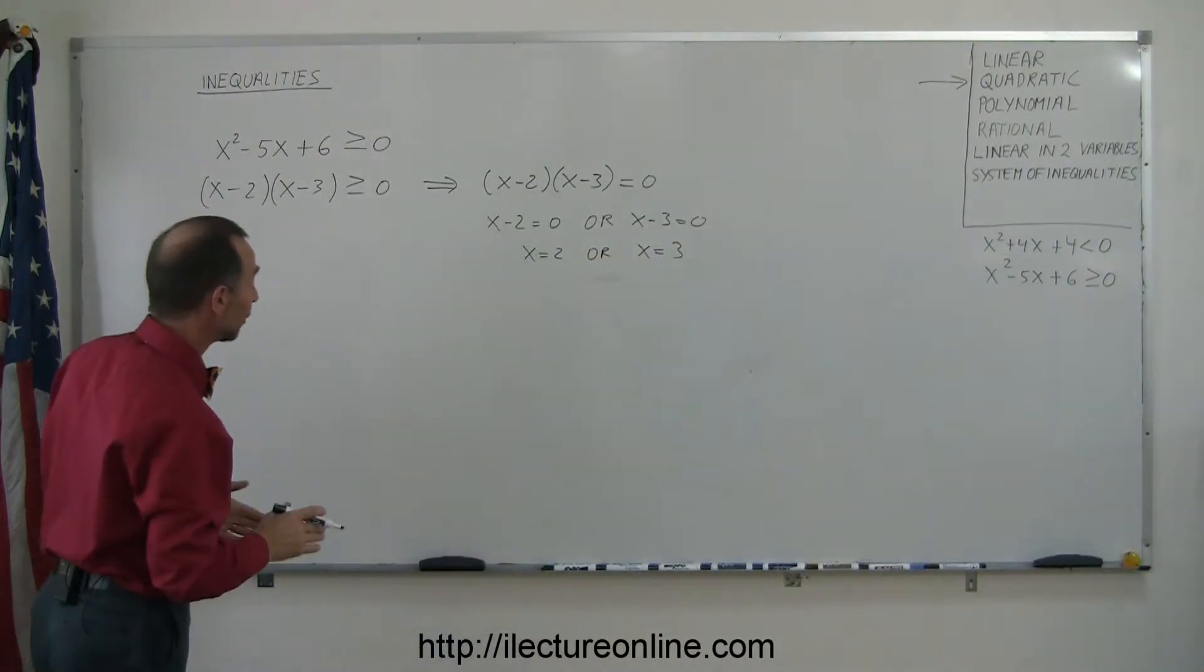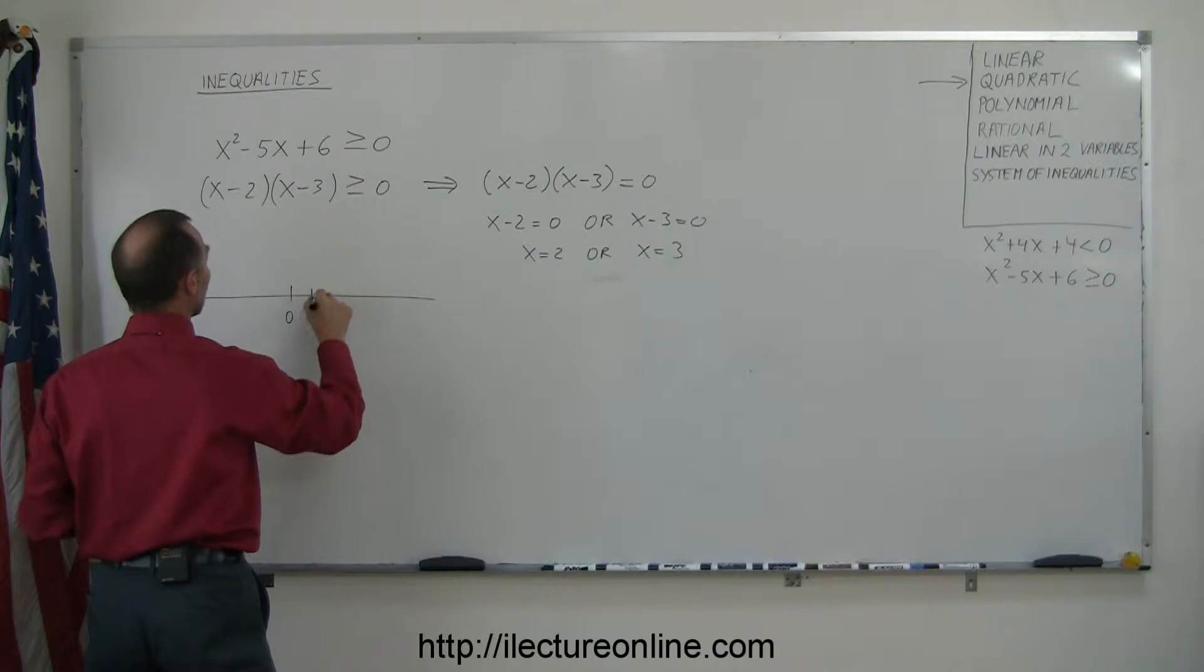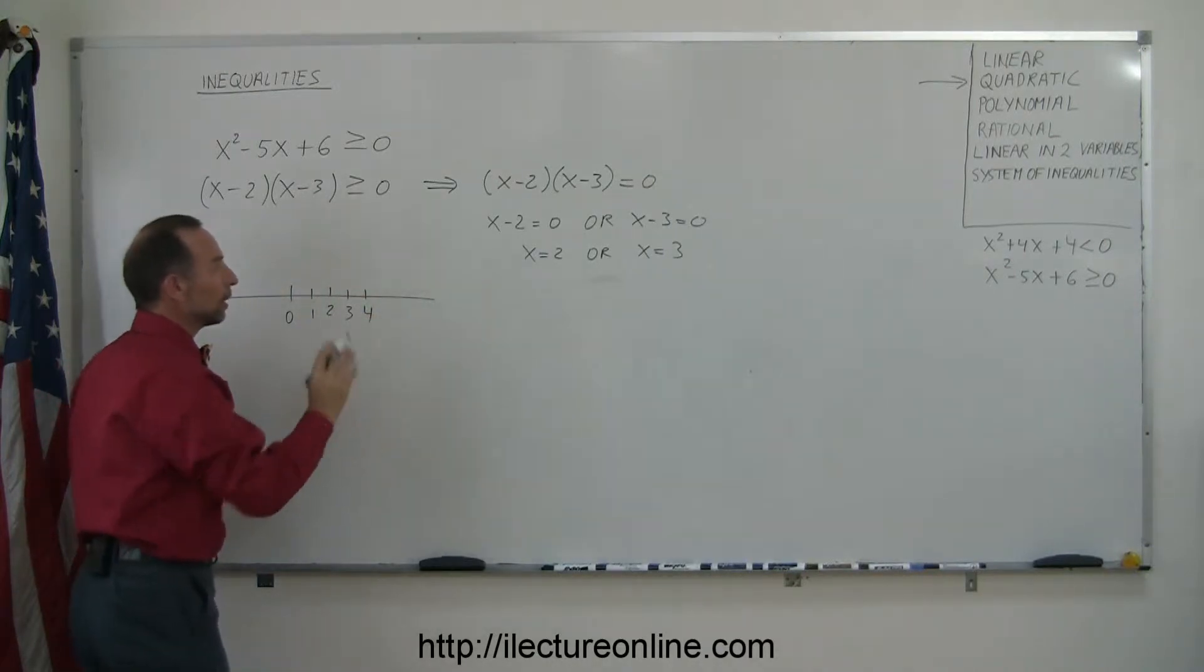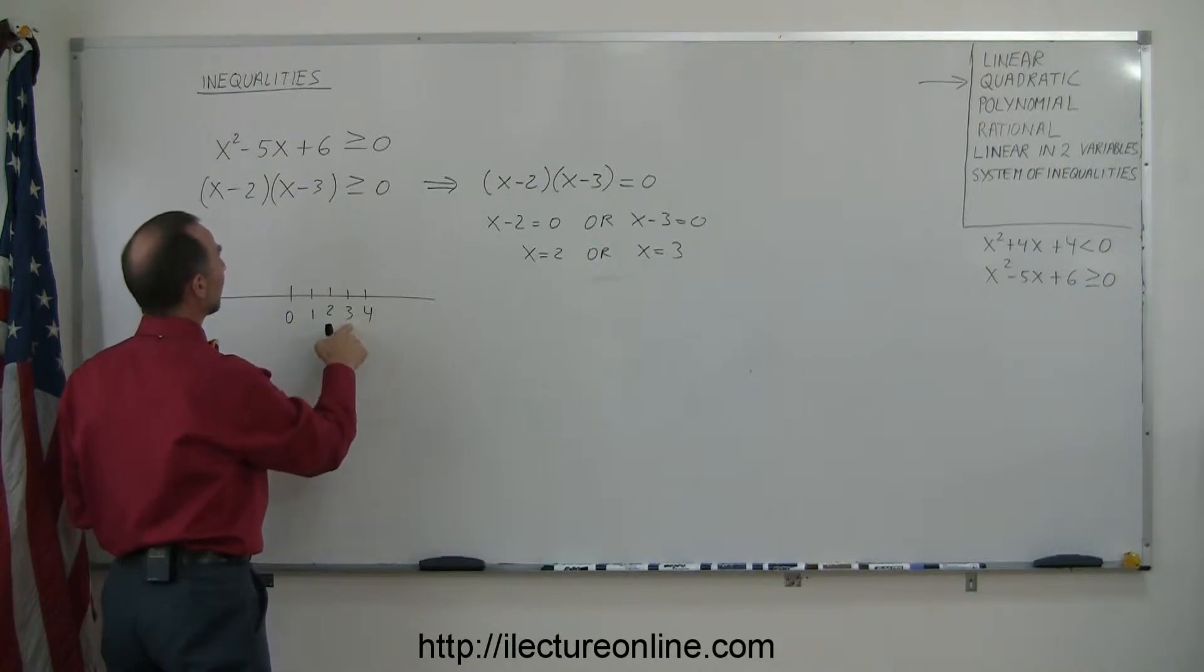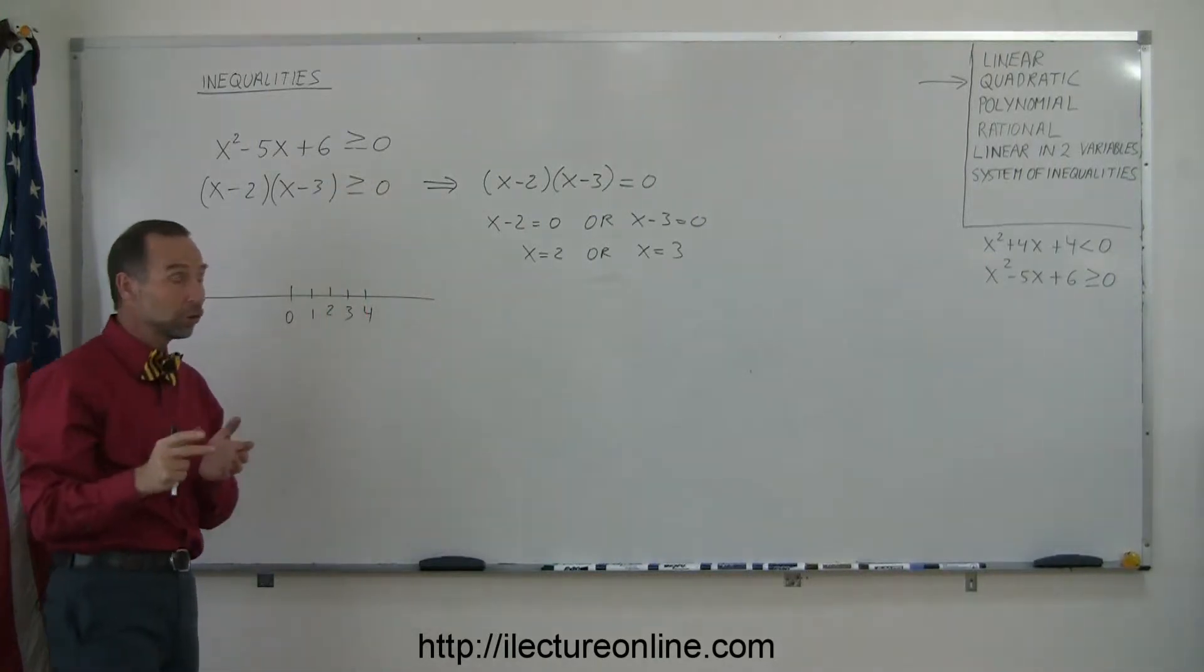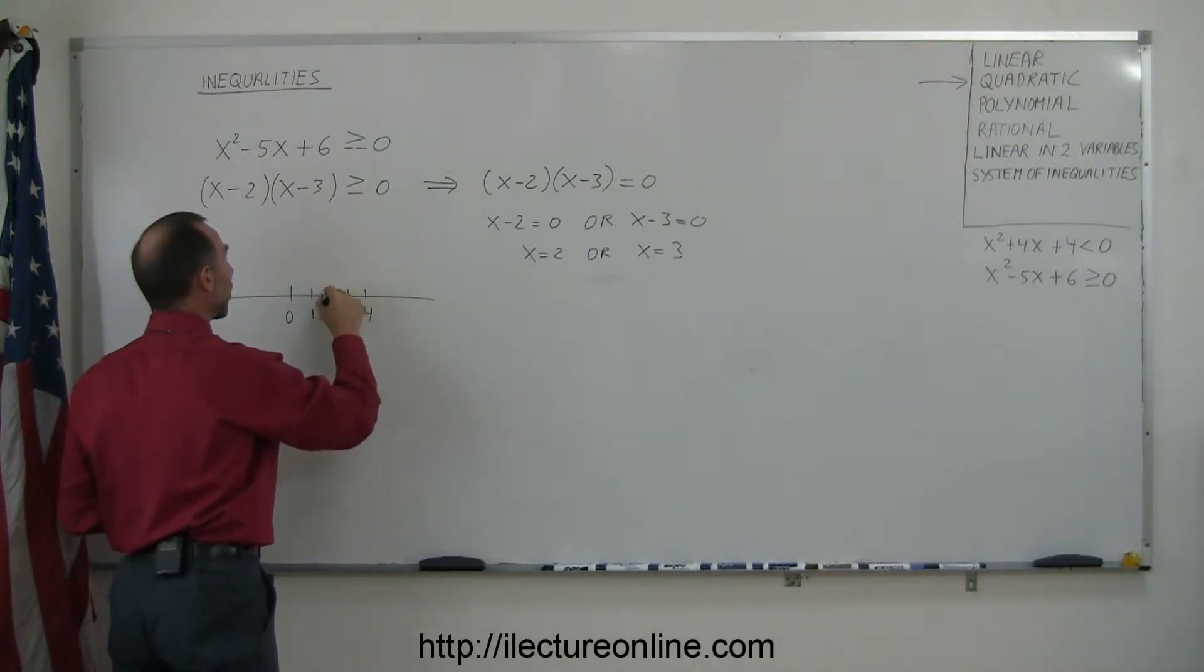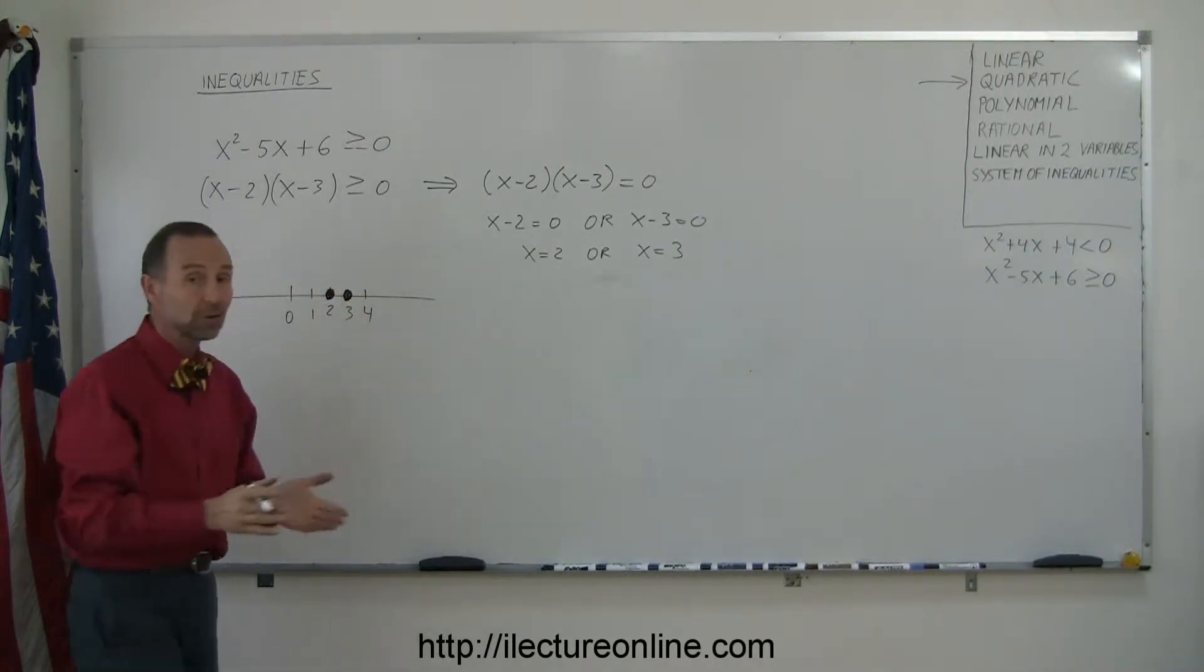So those are the two critical points of our solution. If we draw the number line, if we find those two points on the number line, this is 0, 1, 2, 3, 4. The number 2 is right here, the number 3 is right there. And we also have an equal sign in the inequality, which means the solution will include those two particular points. That means we can draw solid circles on top of those points, indicating that 2 and 3 are part of the solution.